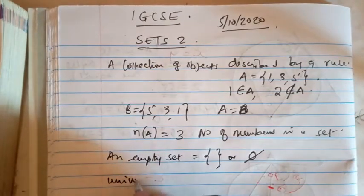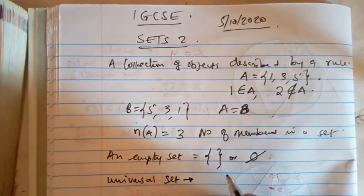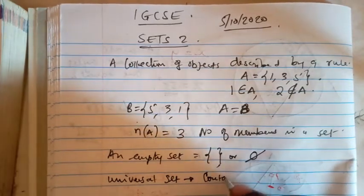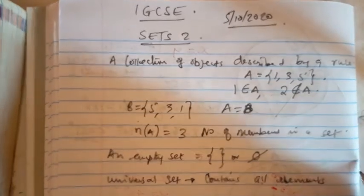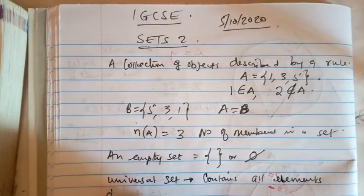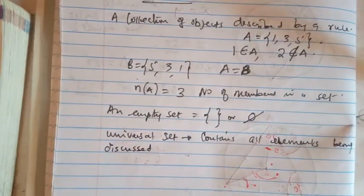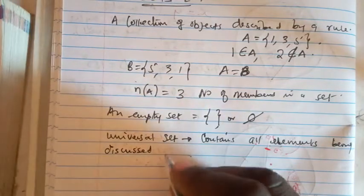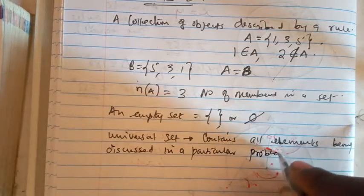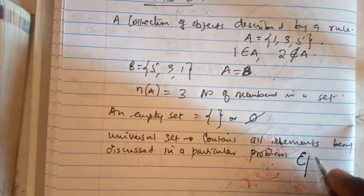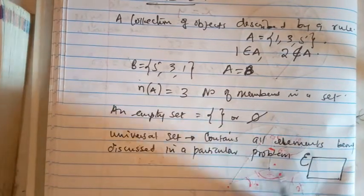A universal set contains all elements being discussed in a particular problem. We denote the universal set with a special symbol. Everything that is under discussion in a particular question is going to be the universal set.